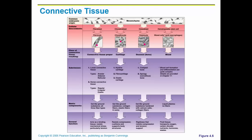In this diagram, you are looking at the different types of cells that make up the different types of connective tissue. In the first column, we're looking at a fibroblast, and fibroblasts are the most common cell you'll find in connective tissue proper. You can see at the top here that all of the different connective tissue comes from a certain type of embryonic cell called mesenchyme.